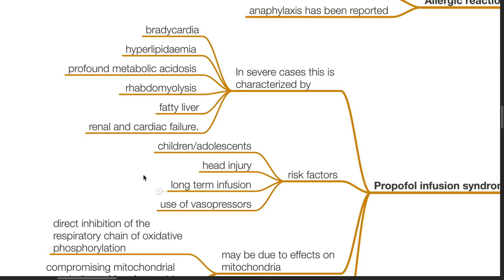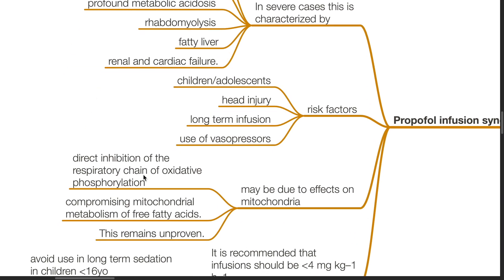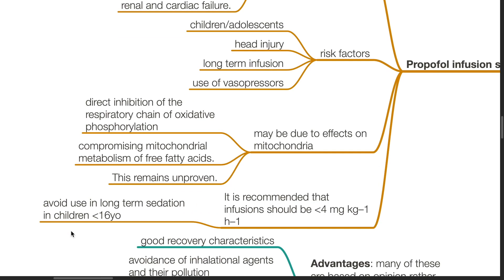Risk factors for propofol infusion syndrome include children and adolescents especially under 16 years old, head injury, long-term infusion, and use of vasopressors. It may be due to effects on the mitochondria — direct inhibition of the respiratory chain of oxidative phosphorylation, compromising mitochondrial metabolism of free fatty acids — though this theory remains unproven. It is recommended that propofol infusions should be less than 4 mg per kg per hour, and long-term sedation should be avoided in children under 16 years old.